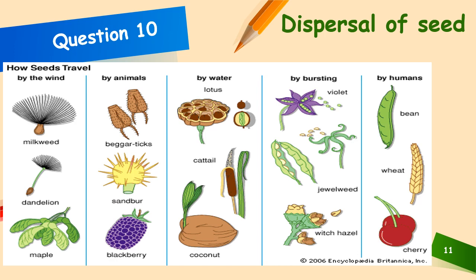Methods of seed dispersal can be categorized into two main types: dispersal by agents and dispersal by itself. Wind: some plants have seeds that are lightweight and equipped with structures like wings, hairs or parachutes, which enable them to be carried by wind over long distances. Examples include dandelions, maple trees and cottonwood trees. Water: seeds of certain plants are adapted to float on water, allowing them to be dispersed by rivers, streams or ocean currents. Coconut palms and water lilies are examples of plants that disperse seeds through water.